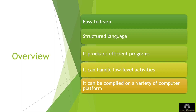C is a powerful general purpose programming language. It can be used to develop software like operating systems, databases, compilers, and so on. C programming is an excellent language to learn for beginners. C was originally developed at Bell Labs by Dennis Ritchie in 1972.